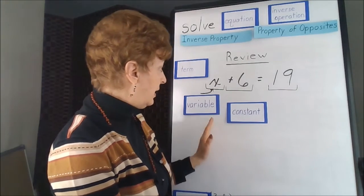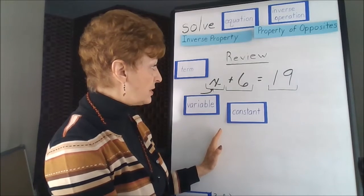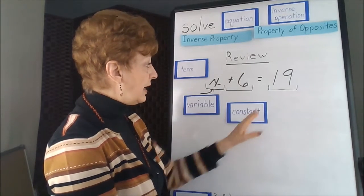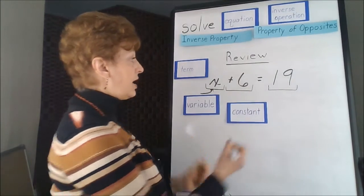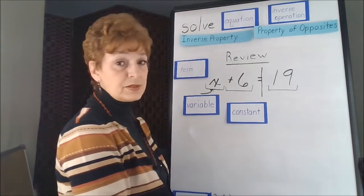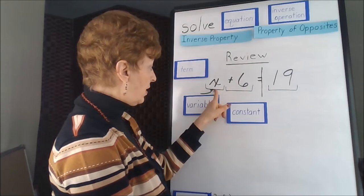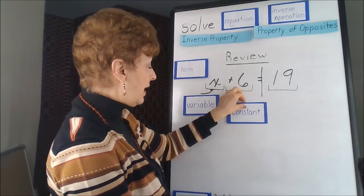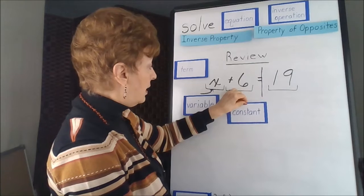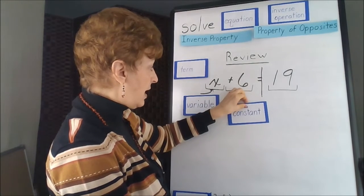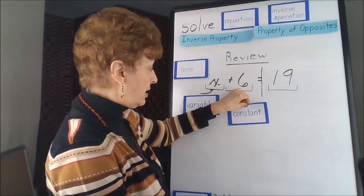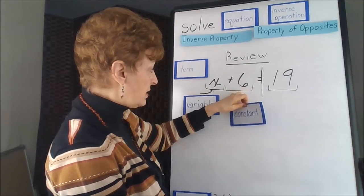The idea here is to put the like terms together. We have like terms, but they're on either side of this equal sign. So, in order to solve for our x value, we want to isolate that value, having it be on one side of the equal sign and all of the numbers on the other side of the equal sign.